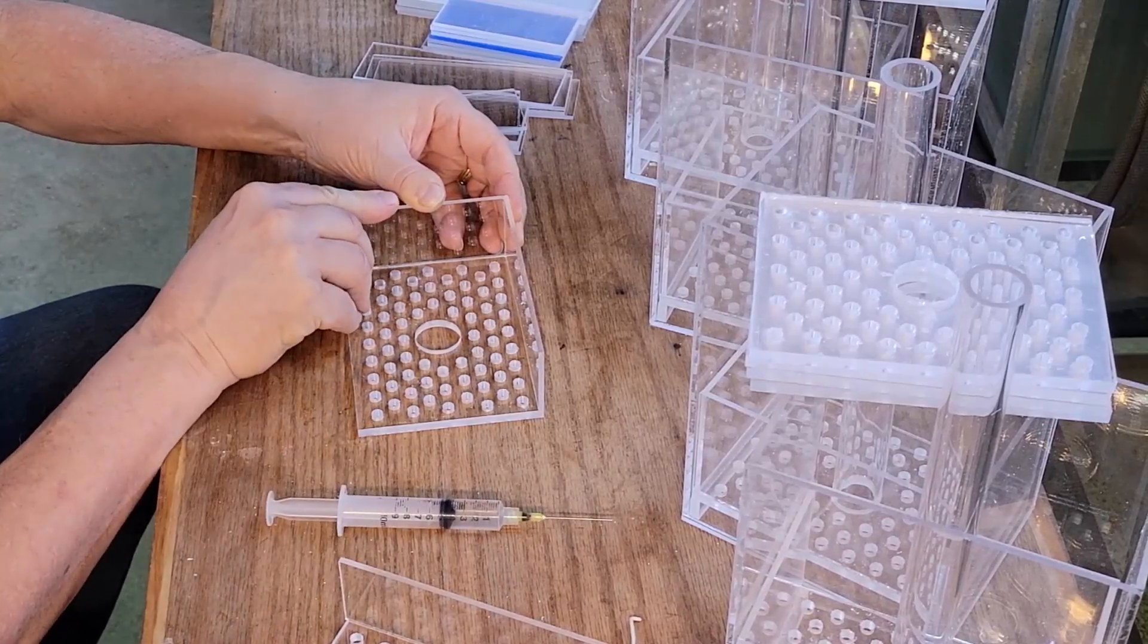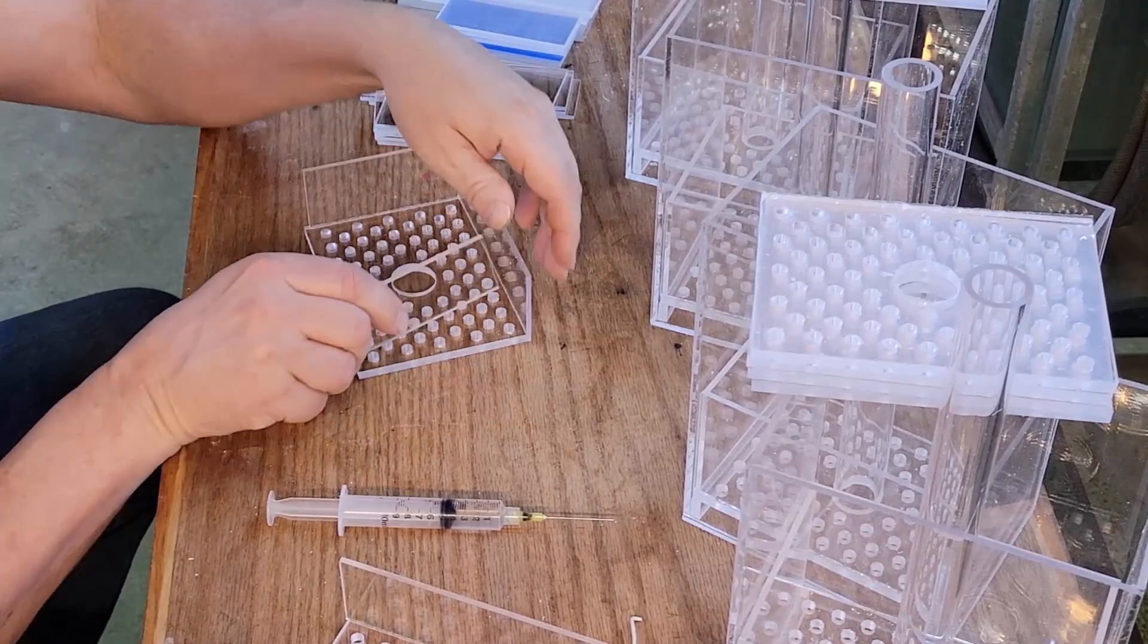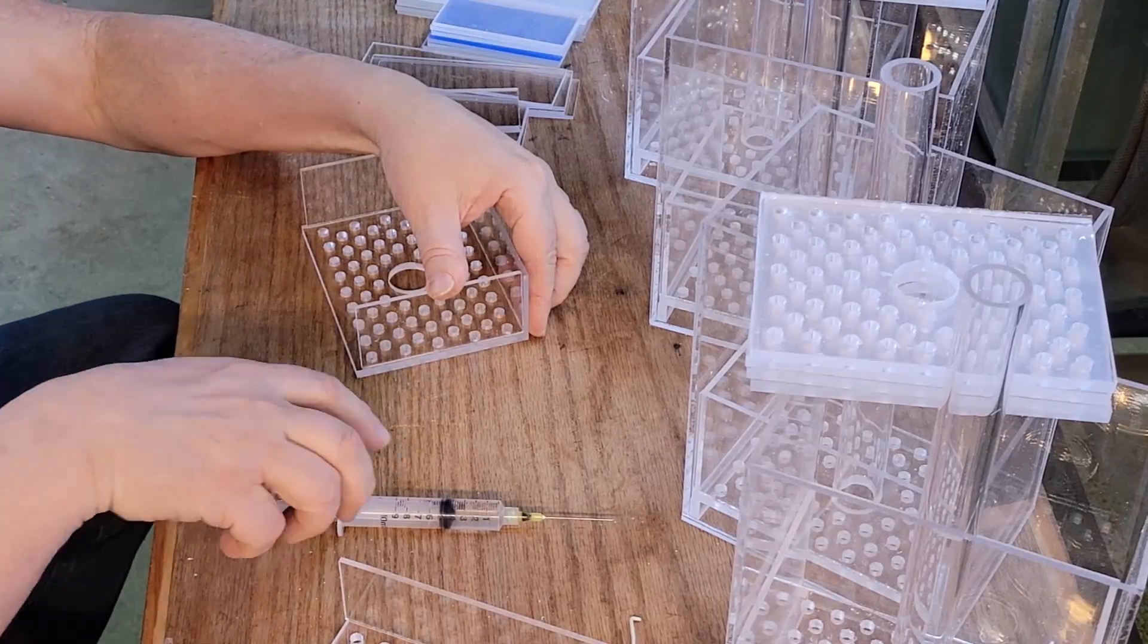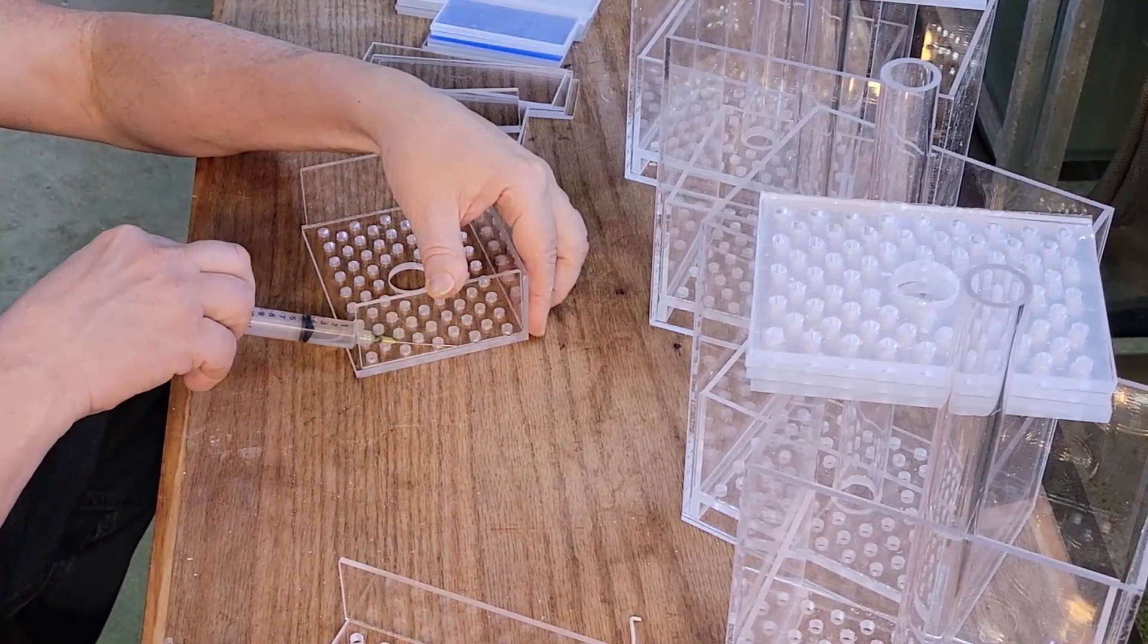Whenever I do welding, you can see all these pieces here - I try to assembly line it because once you're all set up, you want to go through as much of that as you can as possible.